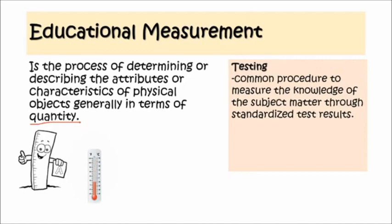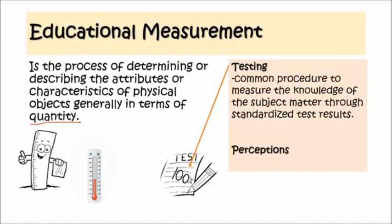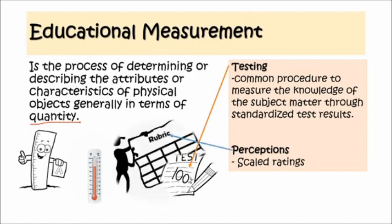In doing so, we need the following. First is testing — the common procedure to measure knowledge of subject matter through standardized test results. And we also have perceptions, which happen when we ask a group of experts to rate the student's knowledge of subject matter on a scale of 1 to 5 — a scale rating — where 1 is the lowest and 5 is the highest. In this procedure, knowledge of the subject matter is being measured through perceptions.